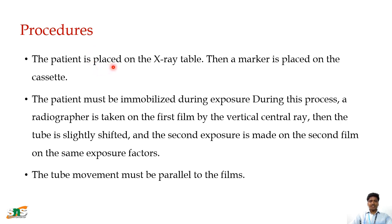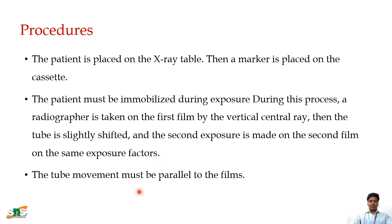For the procedure, the patient is placed on the X-ray table, then a marker is placed on the cassette to determine the right or left side. The patient must be immobilized with immobilization devices. The first exposure is taken on the first film using a vertical central ray, then the tube is slightly shifted and a second exposure is made on the second film using the same exposure factors with a mild tube shift of 10%. The tube movement must be parallel to the films for both images.